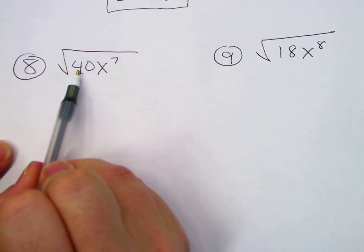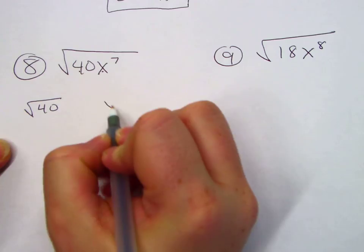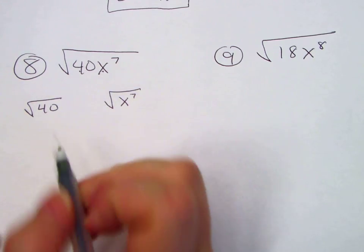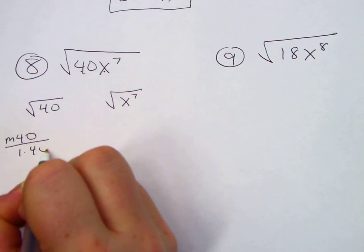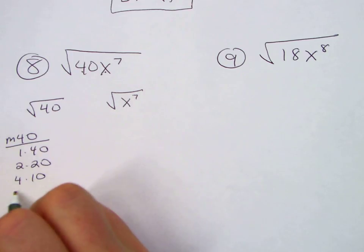So the first thing I like to do when I have numbers and letters, break them up. I just think it creates less mistakes. What multiplies to 40? 1 times 40, 2 times 20, 4 times 10, 5 times 8.